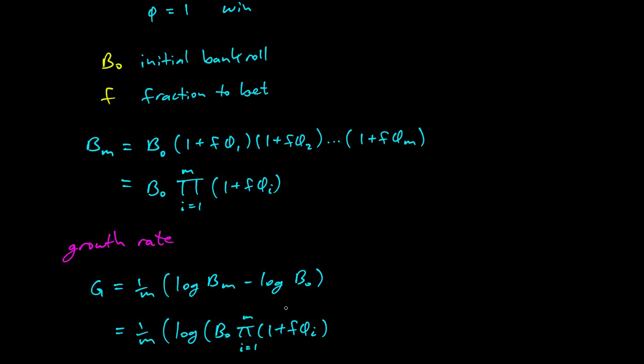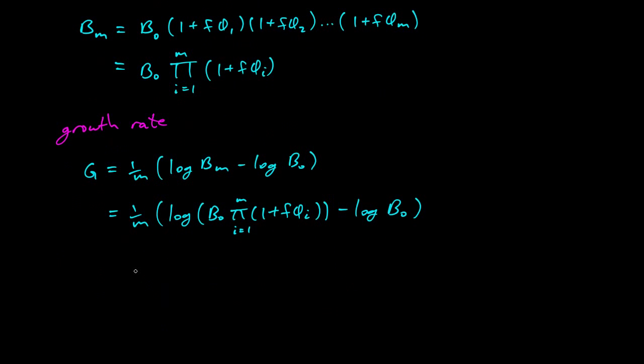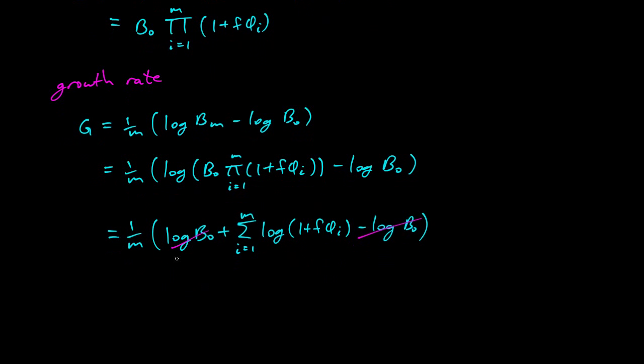Now let's substitute in. So this will be log of B₀ times the product of 1 plus f·φᵢ, i from 1 to M, minus log B₀. Now I have a product of factors here inside a logarithm. So the log of the products is the sum of the logs. So I can move these around a little bit. This will be log B₀ plus, and now here I have a product of the factors, so the log of the product will be the sum of the logs. That'll be a sum from 1 to M of log of the factors. And then minus the log B₀. These cancel out here.